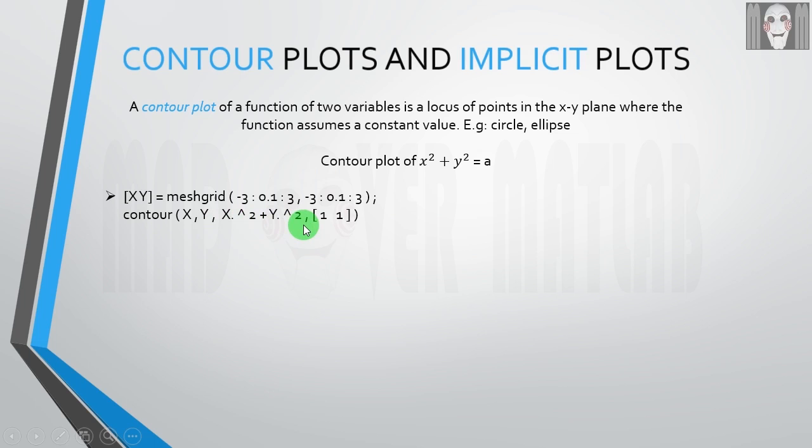In this case, it is X squared plus Y squared. After that, we should give the constant value that the function assumes, which is this a in this case, in this vector.